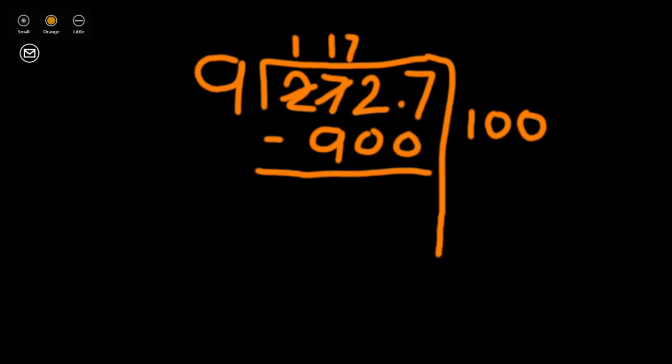Now let's start our subtraction. 7 minus 0 is 7. 2 minus 0 is 2. 17 minus 9 is 8. And 1 minus nothing is 1. So now we have a new dividend of 1827. That's much closer and much easier to break down now.